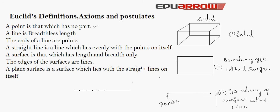The edges of surfaces — if we consider one of the edges, let us say AB, then the surface has a line. The next and last definition is: a plane surface is a surface which lies evenly with the straight lines on itself.